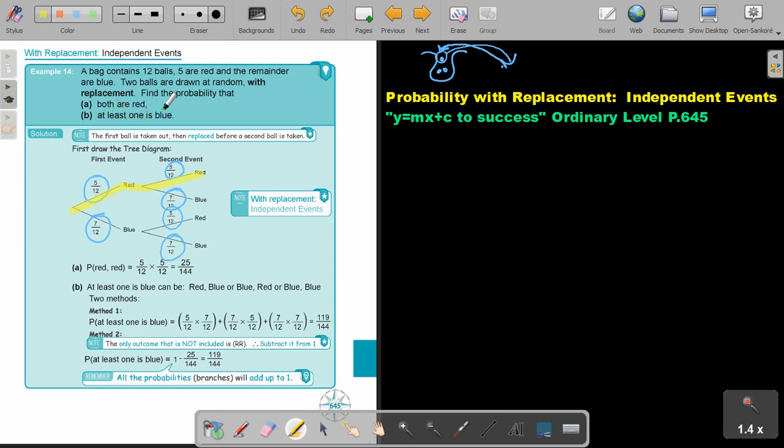At least one is blue. Let's just find that road. So it means one is red and the other one is blue. Or it can be blue, red. But at least also means both of them can be blue. So it can be blue, blue. Can you see, it's basically going to be this one, this one, and this one. But if you take all four of these branches, remember, you must always get a certainty of one. So there's actually two ways of doing it.